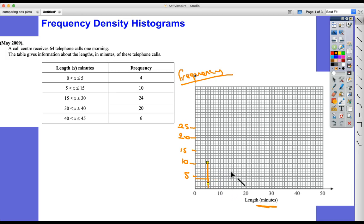So that would mean a little bar like that. And the next one's 5 to 15, so that would be 10. The next one, 15 to 30, and we're going up to 24. I'm not actually going to finish this, I'm not going to waste my time on doing something that is so obviously wrong. Now then, what's the problem?